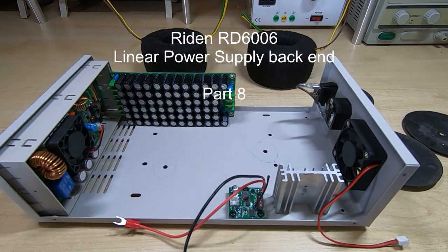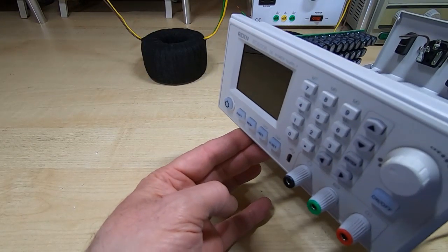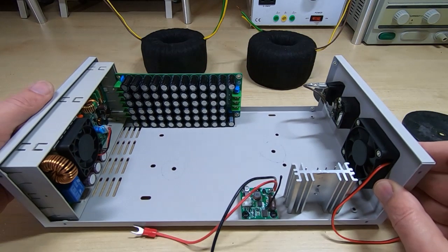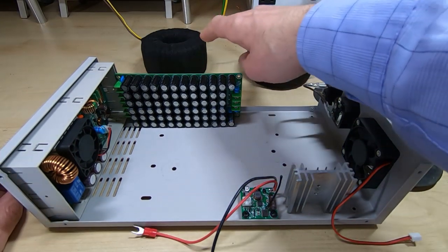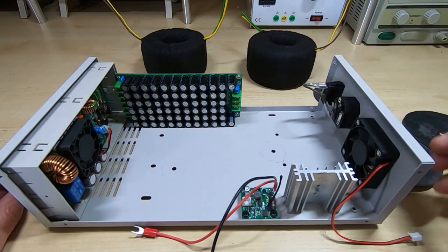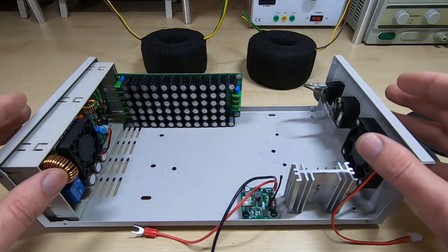This is part 8 in a series of videos in which I'm building this power supply based on a Ryden RD6006 power controller. In the previous videos I've gone through rewinding the two transformers that I'll be using, and we've looked at the various ways that I'll be configuring the power supply.